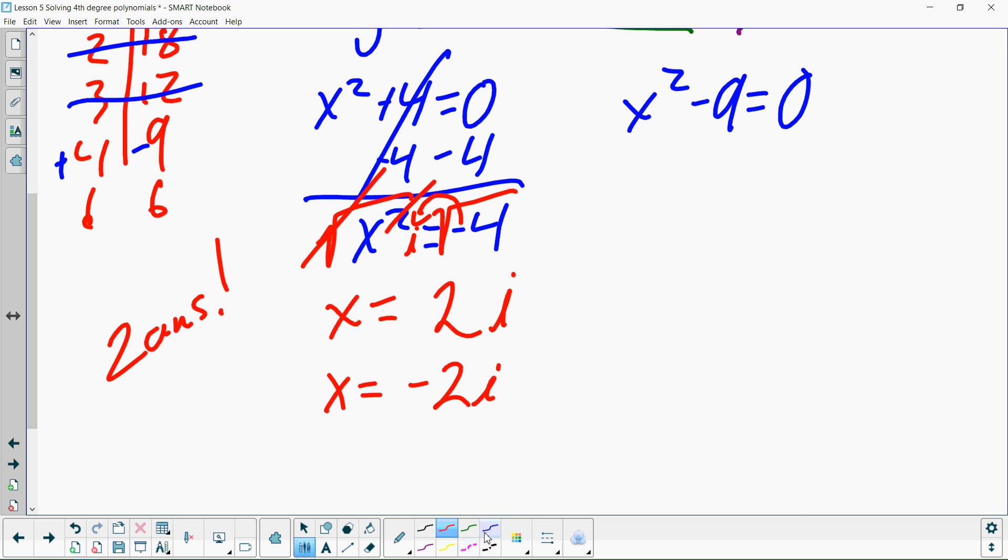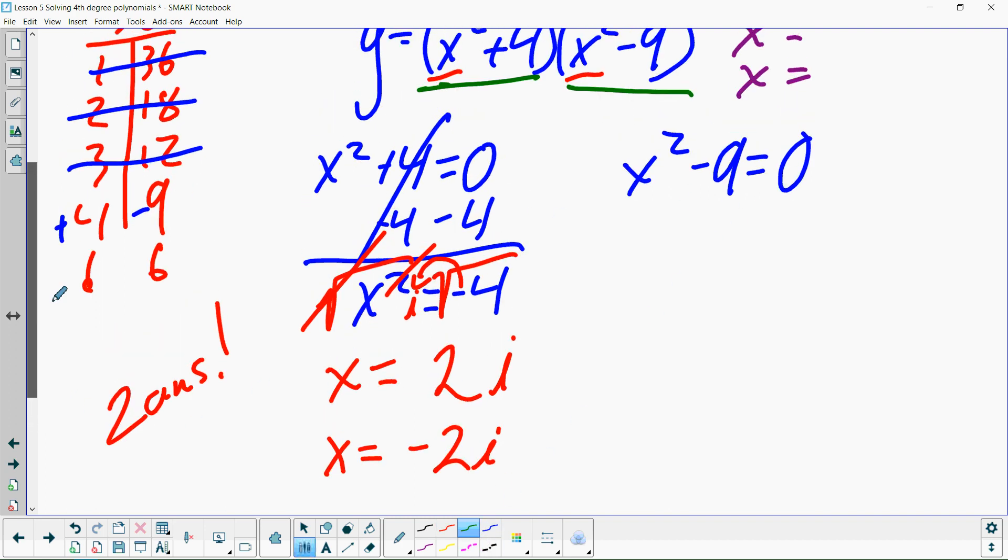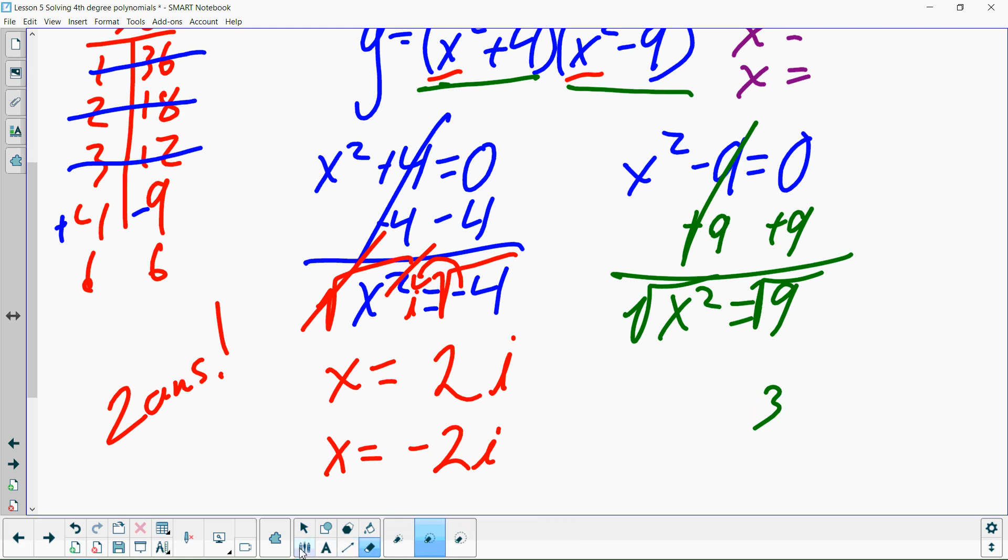And then let's finish this off. So plus 9 on both sides to move the 9 over. So we have x squared equals 9. Take a square root of both sides. The square root of 9 is 3. And negative 3. And there you go. That's the end of the problem. Those are your four roots.